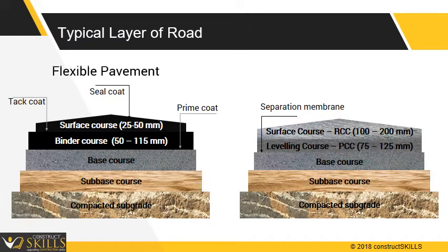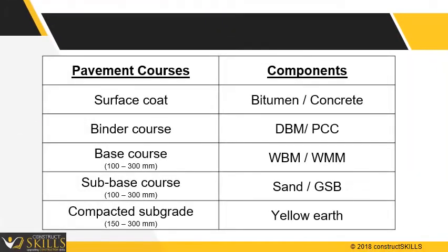The sketch shows typical layers of a flexible and a rigid pavement. Usually, the base and sub-base courses are the same. Depending upon requirements, usage of roads, and wear and tear conditions, a choice between flexible or rigid pavement is made. The table lists typical components for each course and layer of the pavement. Each component has a specific function, and the thickness and type of material depend upon the requirements of the road for which it is designed.